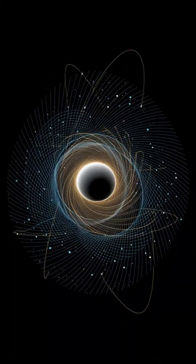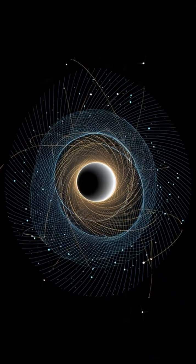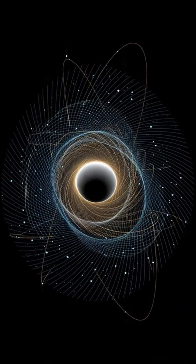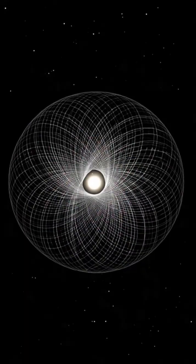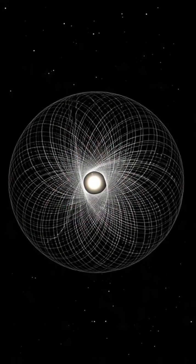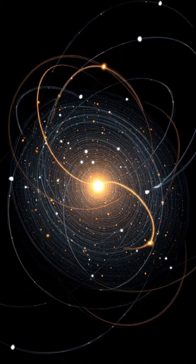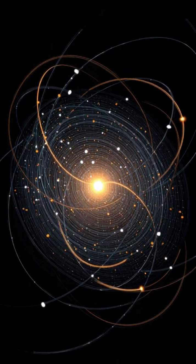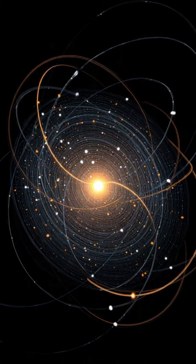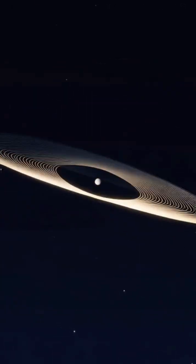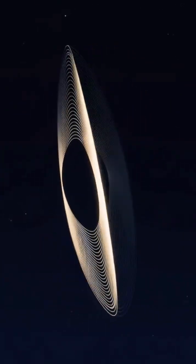S62 completes a wild orbit every 10 years, but it doesn't follow the neat ellipses of classical physics. Instead, its orbit precesses, shifting by about 10 degrees each cycle, a swirling, spirograph-like path predicted only by Einstein's general relativity.